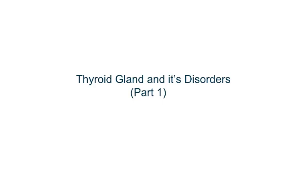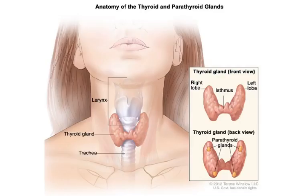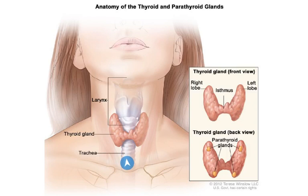Hello everyone, today's topic is thyroid gland and its disorders. As usual, we'll start from the basic anatomy. Here is the neck, and in front of the neck we have the thyroid gland. It is in front of the larynx and trachea, which is the windpipe.